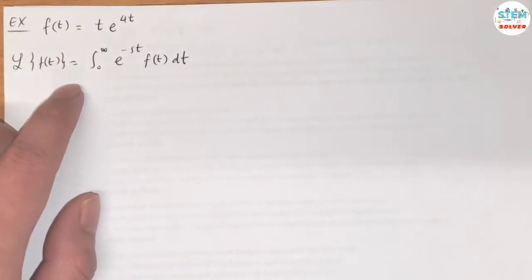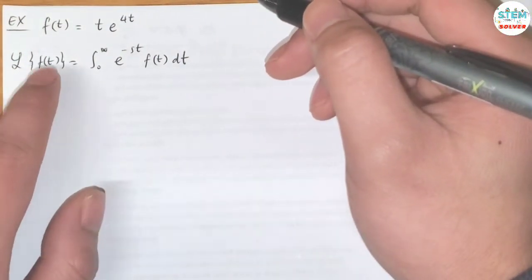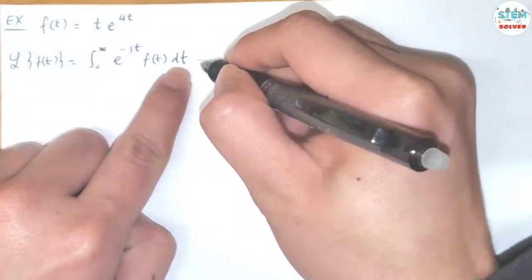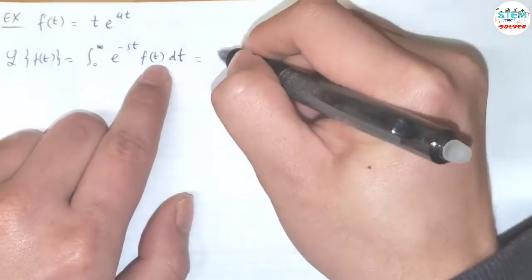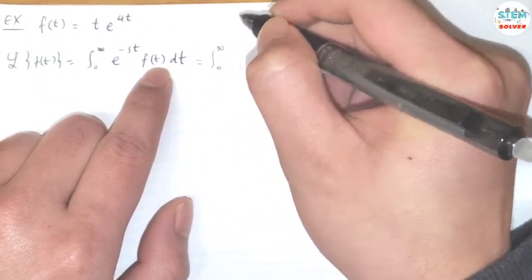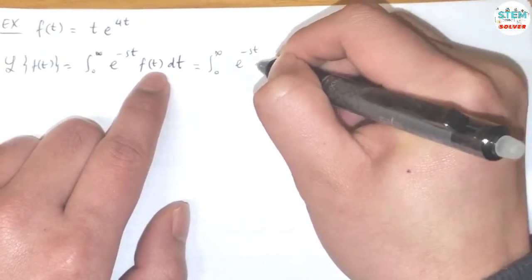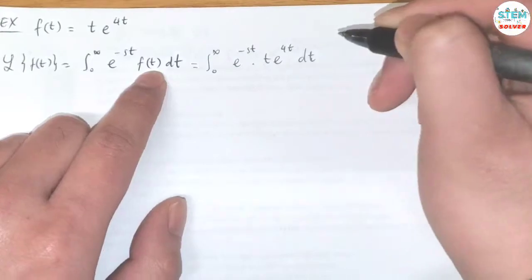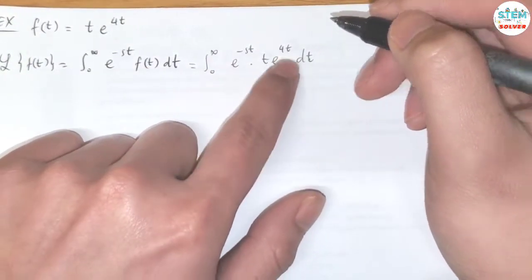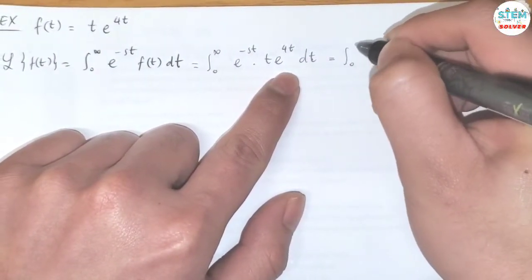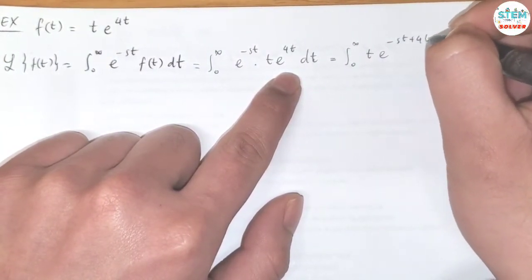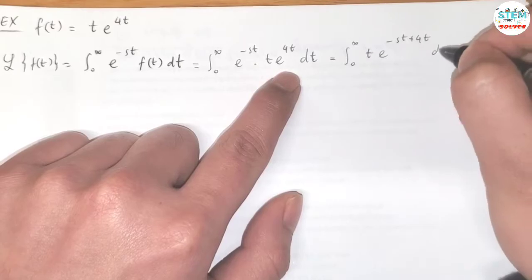By the Laplace transform of t times e to the 4t, by the definition, the Laplace transform of f(t) is equal to the integral from 0 to infinity e to the negative st f(t) dt. So whatever f(t) is, just plug it into here. So we have the integral from 0 to infinity e to the negative st times t e to the 4t dt. So we have this, add the exponents together, which means e to the negative st plus 4t dt.